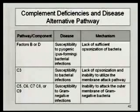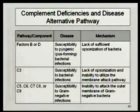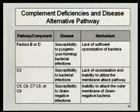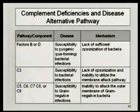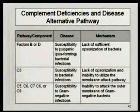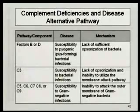Deficiencies in the later components of the lytic pathway make patients susceptible to gram-negative bacteria. What's the difference between gram-negative and gram-positive? The gram-negatives have an outer membrane; gram-positives don't. The MAC complex lyses the outer membrane of gram-negative bacteria and kills them. Gram-positive bacteria don't have an outer membrane and are not susceptible to lysis by complement. So gram-negative infections are what you see in patients with these late complement component deficiencies.